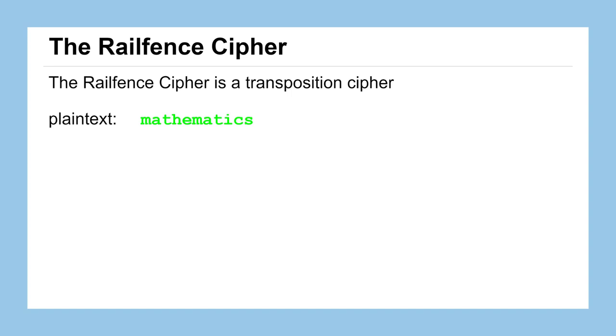One variation on the railfence cipher is to change the number of rows used to create the ciphertext. Here we'll keep the same plaintext word of mathematics and we'll put m-a-t on the first, second, and third rows and then we'll zigzag back up h on the second row, e on the first row, and back and forth.